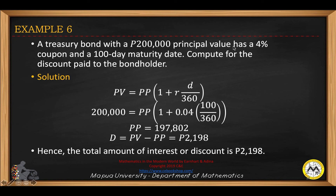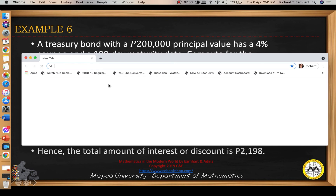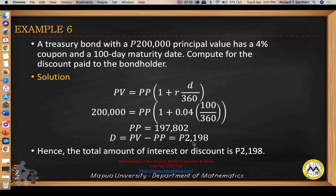A treasury bond with a 200,000 principal value has a 4% coupon rate and a duration of 100 days. Compute for the discount paid to the bondholder. Using the formula, PV is 200,000, and 1 plus R equals 1 plus 0.04, multiplied by 100 days over 360. The purchase price PP will be 197,802. The discount is the difference between the face value and the purchase price, which is 2,198. Hence, the total amount of interest or discount is 2,198.